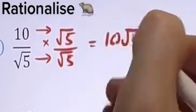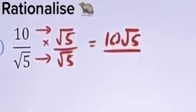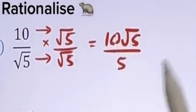So 10 times root 5 is simply 10 root 5. And the bottom, we should know that root 5 multiplied by itself is simply 5. Simplifying our fraction, here we can see 10 over 5.